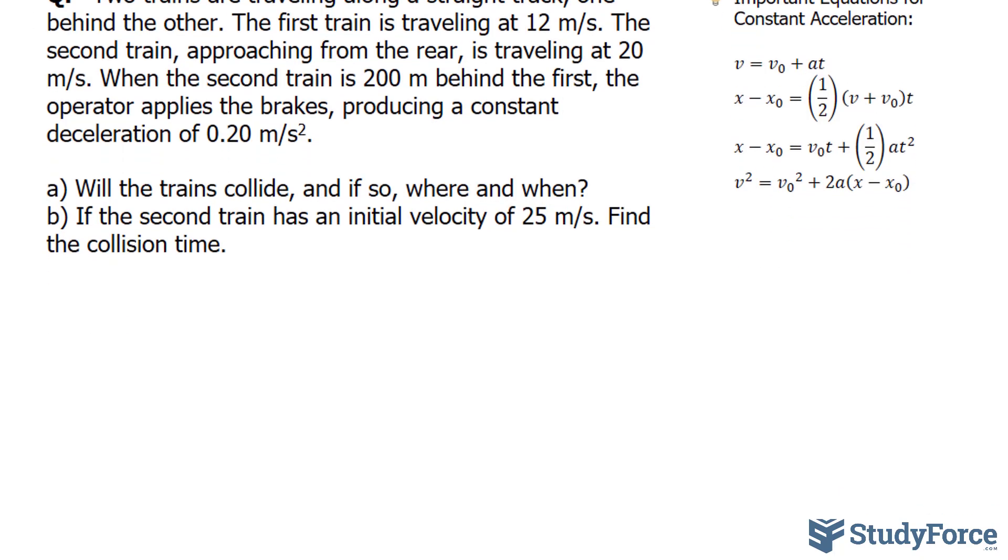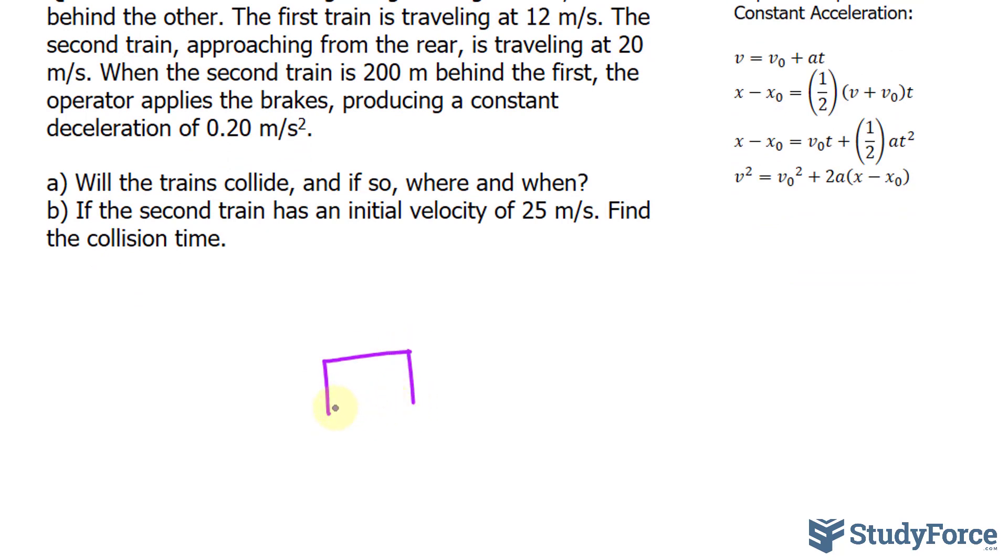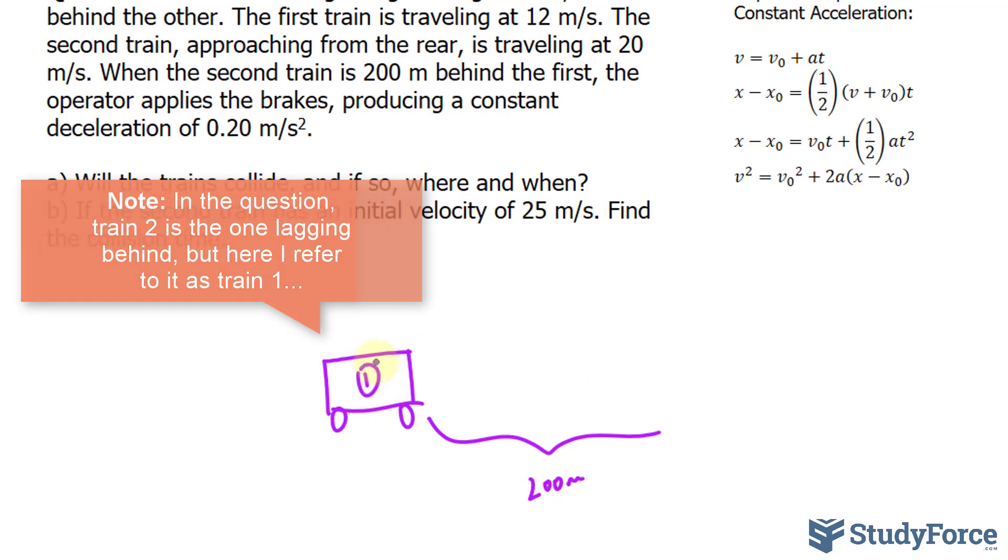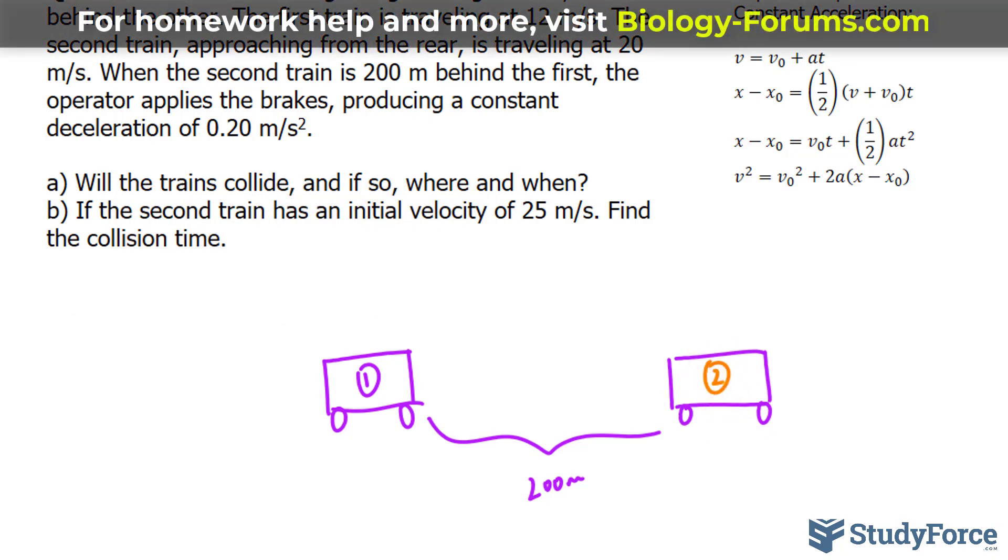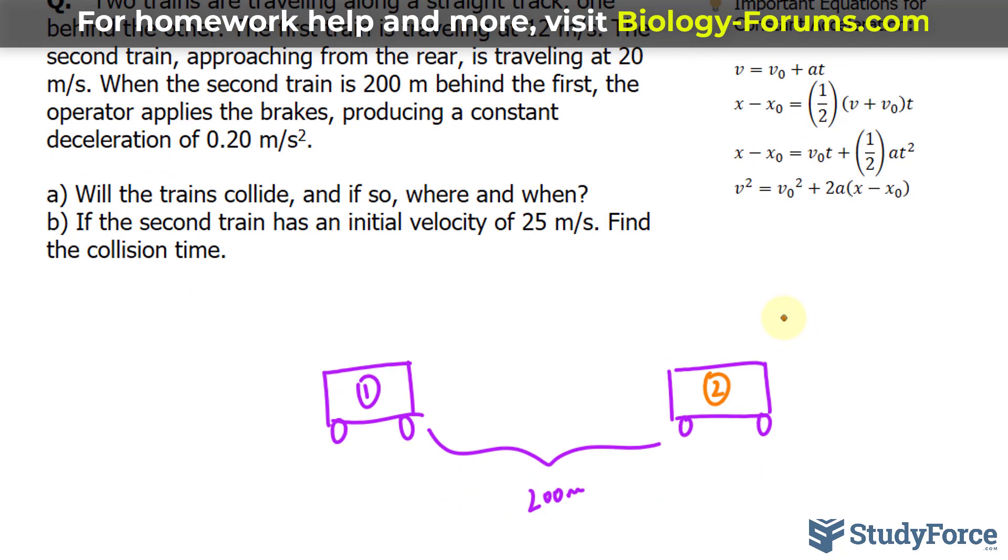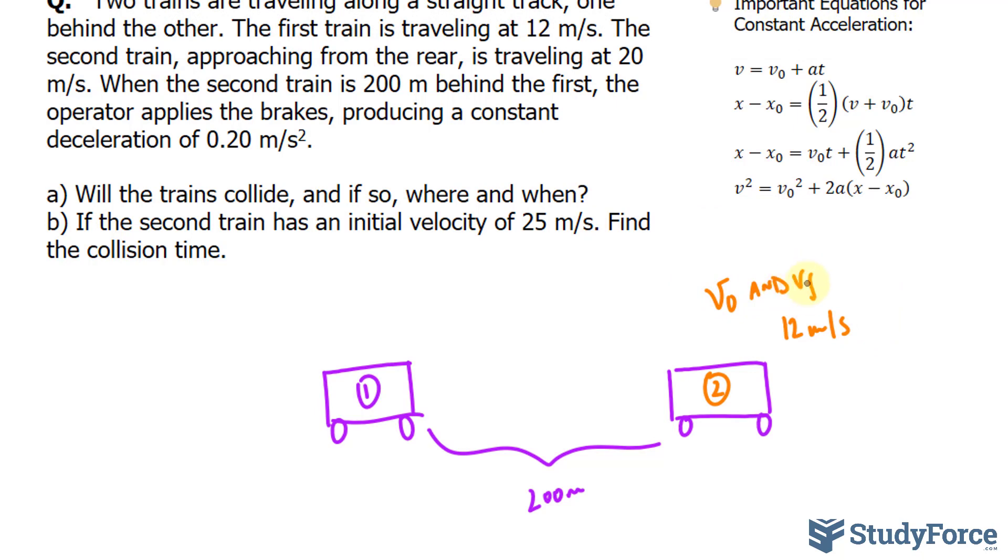Let's make a quick illustration of what's going on. So we have a train which I'll represent by this rectangle and it has two wheels. This one is 200 meters behind train 2. So I'll call this train 1 and this is train 2.